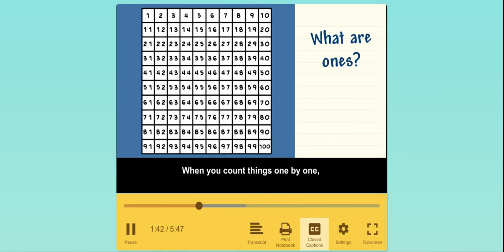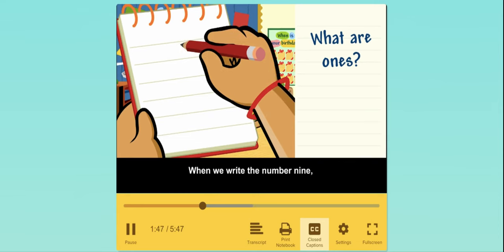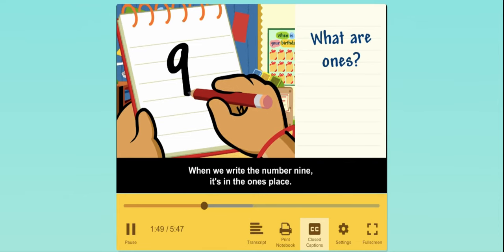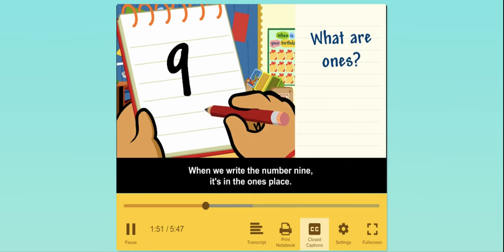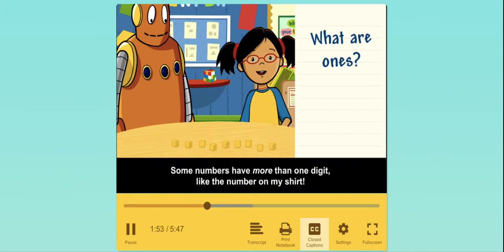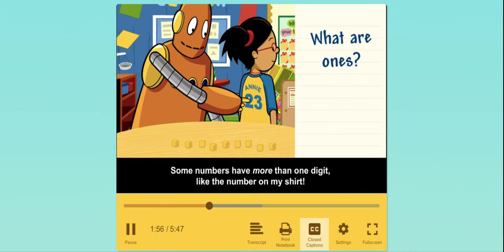When you count things one by one, you count up by ones. When we write the number nine, it's in the ones place. Some numbers have more than one digit, like the number on my shirt.